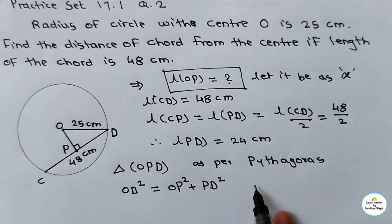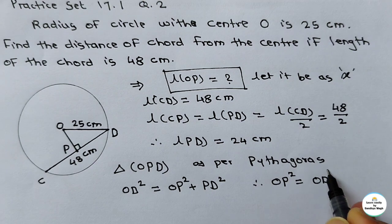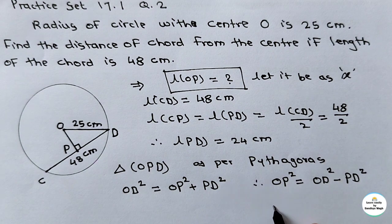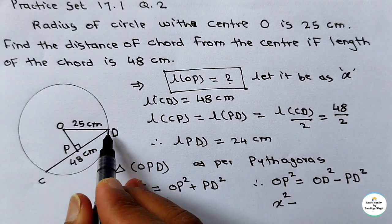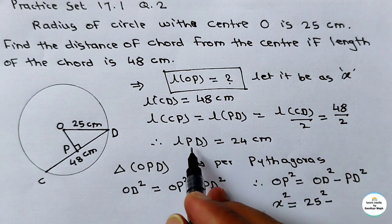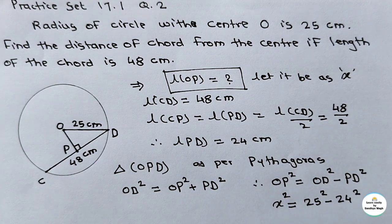So X² = 25² − 24². We can calculate this in two ways: take the squares and subtract, or use the identity A² − B² = (A+B)(A−B). In the next step: 25² = 625, 24² = 576, and the subtraction is 49. So X² = 49, therefore X = 7 cm.